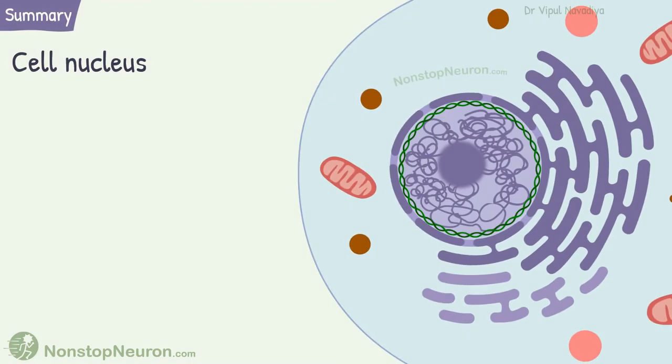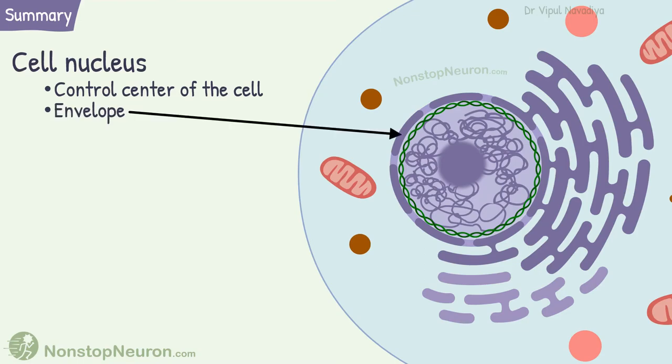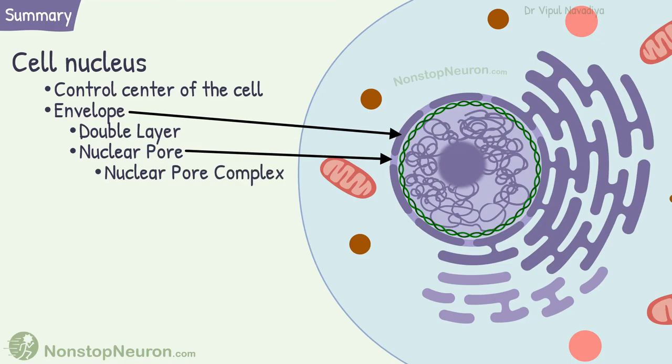Let's have a quick summary. The nucleus is the control center of the cell. Its envelope is a double layer. Both layers meet at nuclear pores. The pores are aligned by nuclear pore complexes. They provide the selectivity to the pores.